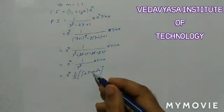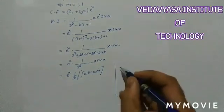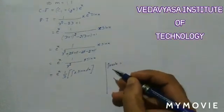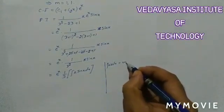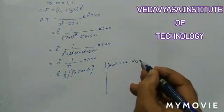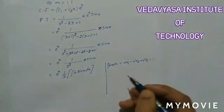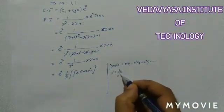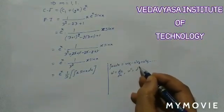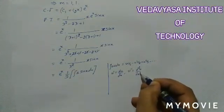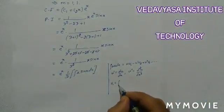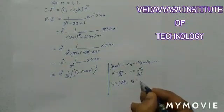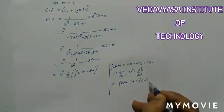To integrate x·sin x, we apply the Bernoulli formula. The Bernoulli formula states: ∫u·v dx = u·v₁ - u′·v₂ + u″·v₃ - ... where u′ = du/dx, u″ = d²u/dx², v₁ = ∫v dx, v₂ = ∫v₁ dx, and so on.